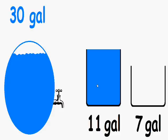Alright, so we took water from the 30 gallon tank and we filled the 11 gallon container. So now we have 19 gallons of water left in the tank.